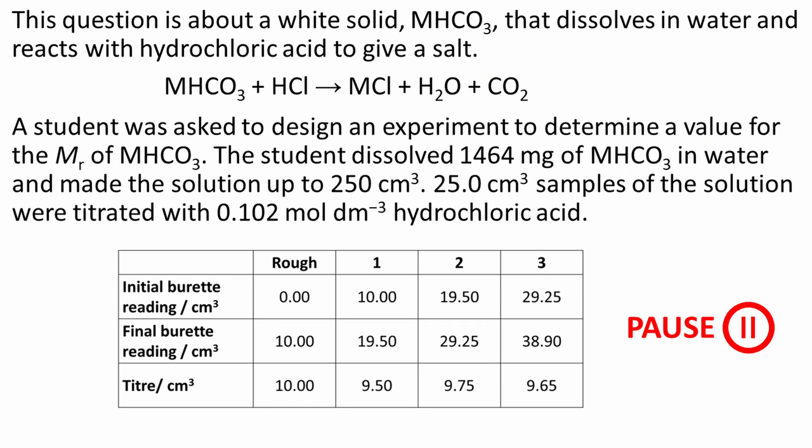Here's the information given at the start of the question. This question is about a white solid MHCO3 that dissolves in water and reacts with hydrochloric acid to give a salt. A student was asked to design an experiment to determine a value for the MR of MHCO3. The student dissolved 1,464 milligrams of MHCO3 in water and made the solution up to 250 cm³. 25.0 cm³ samples of the solution were titrated with 0.102 mol dm⁻³ hydrochloric acid and we're given a table of results.